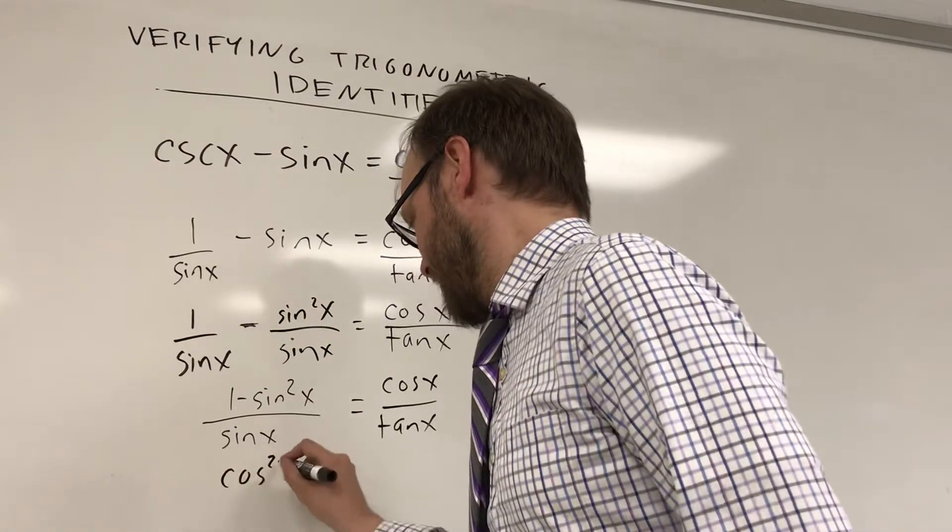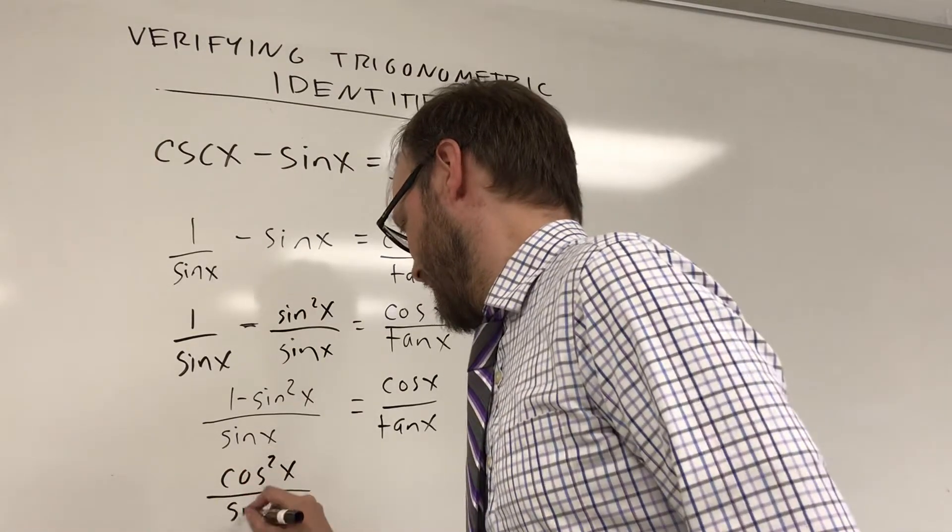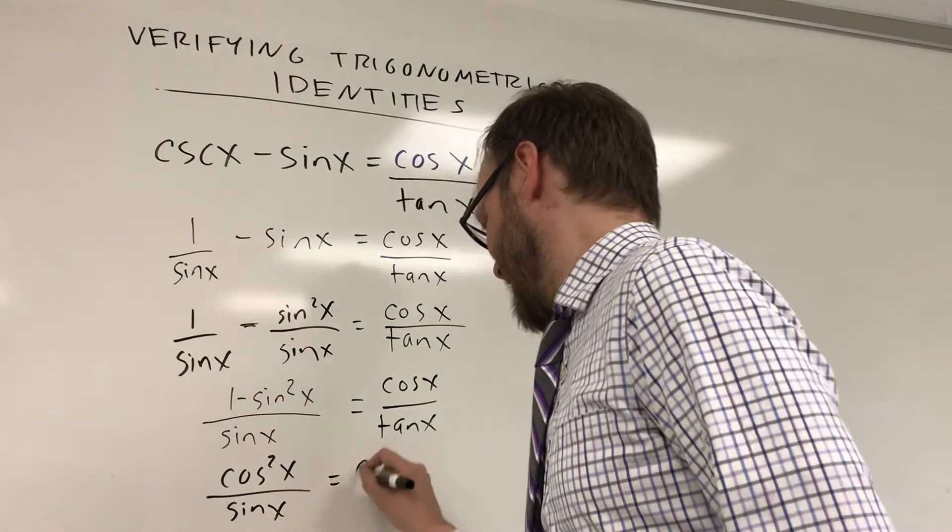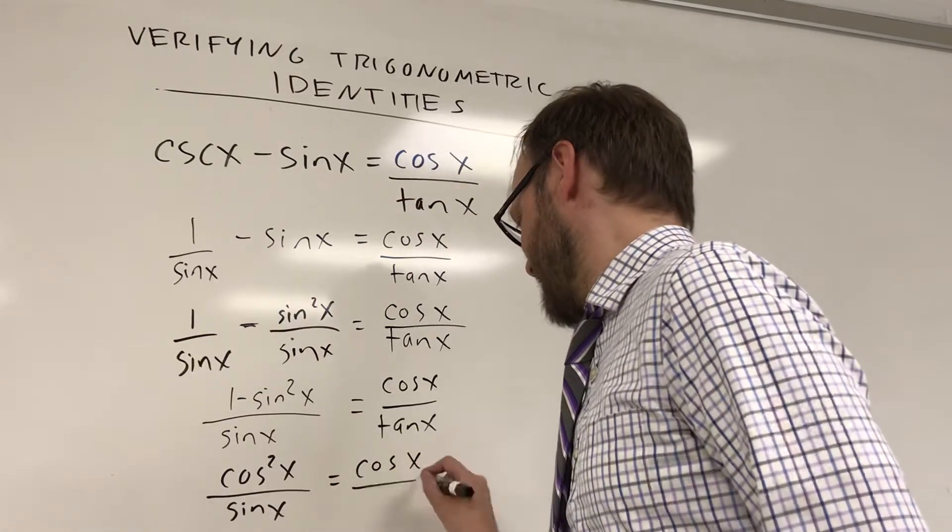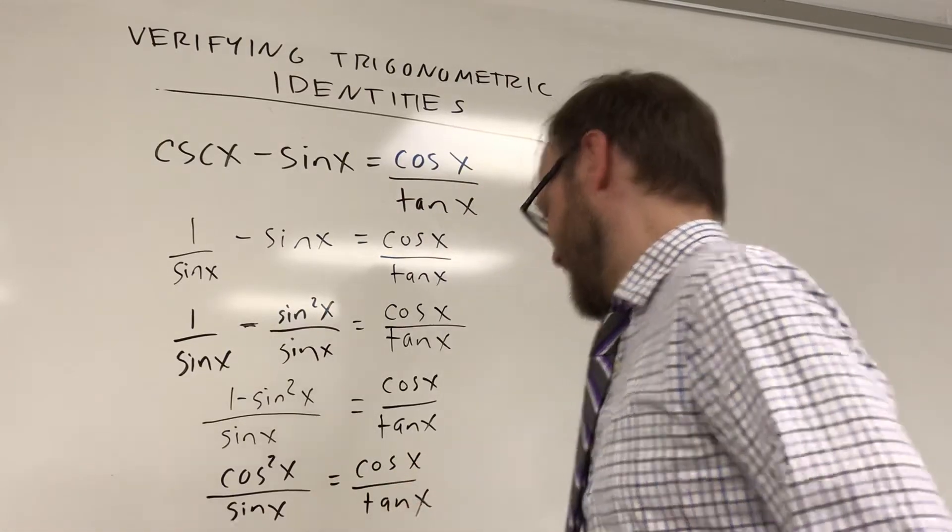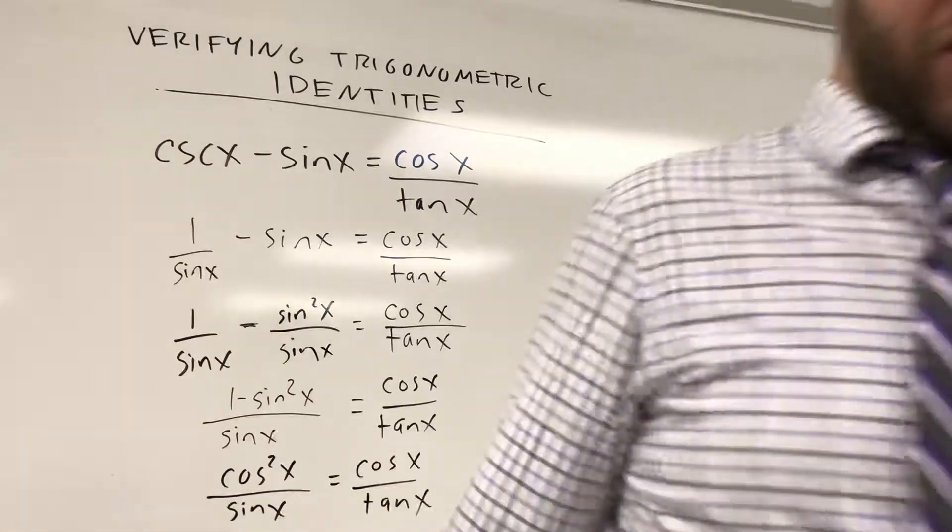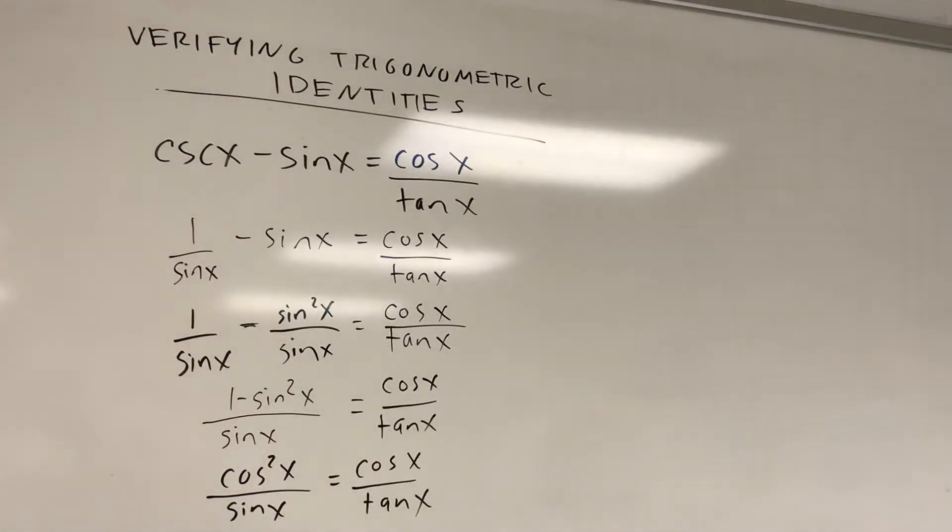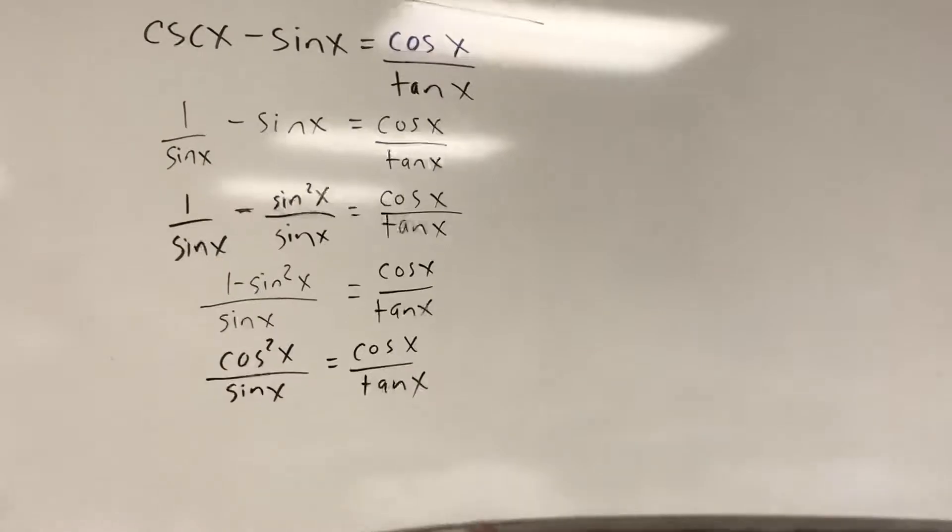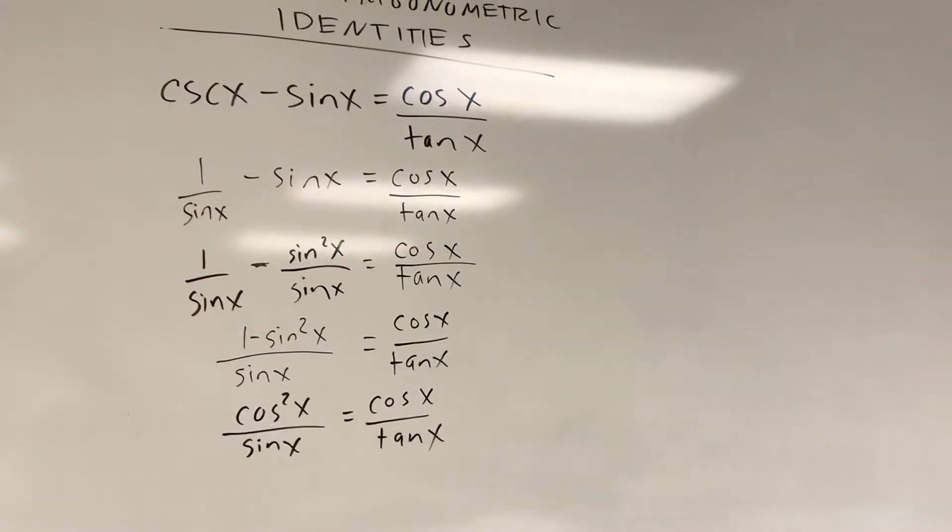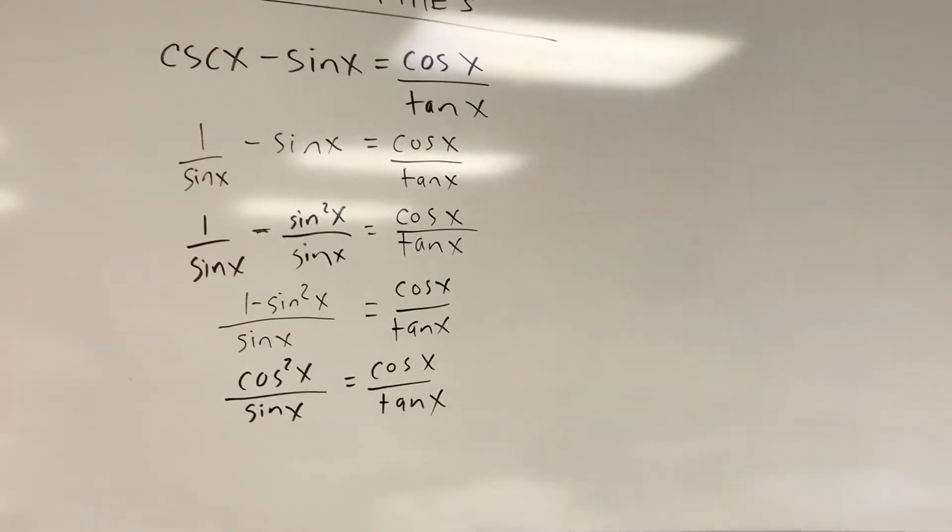And I know that 1 minus sine squared is the same thing as cosine squared. So I'm gonna replace that with cosine squared of x and I'll write that over sine of x, and that's supposed to be equal to cosine of x over tangent of x. And I think I'm just about off the screen here. Let me see if I can adjust this down just a little bit.